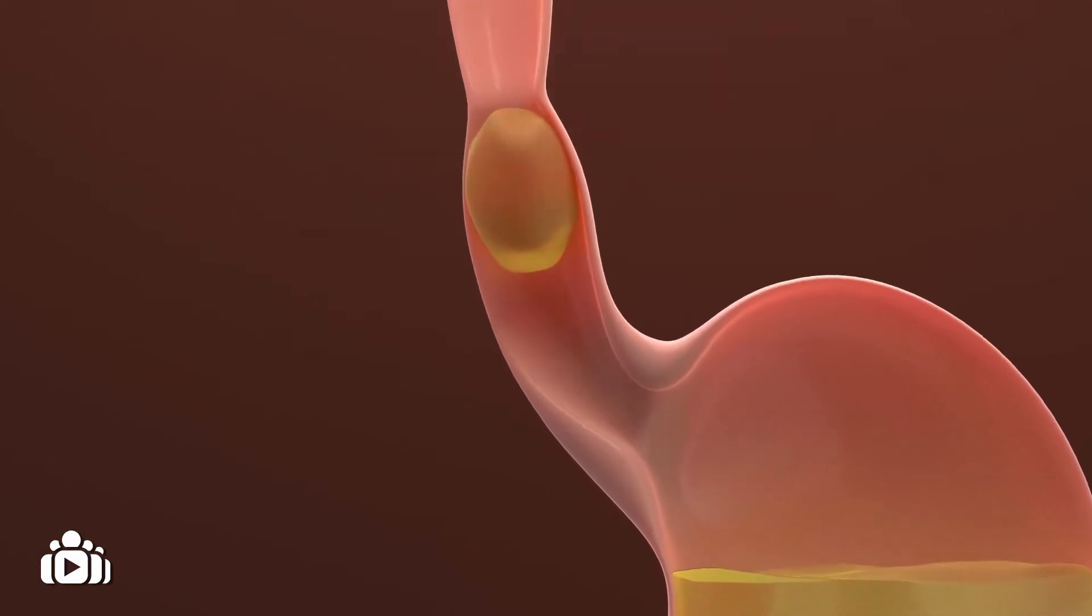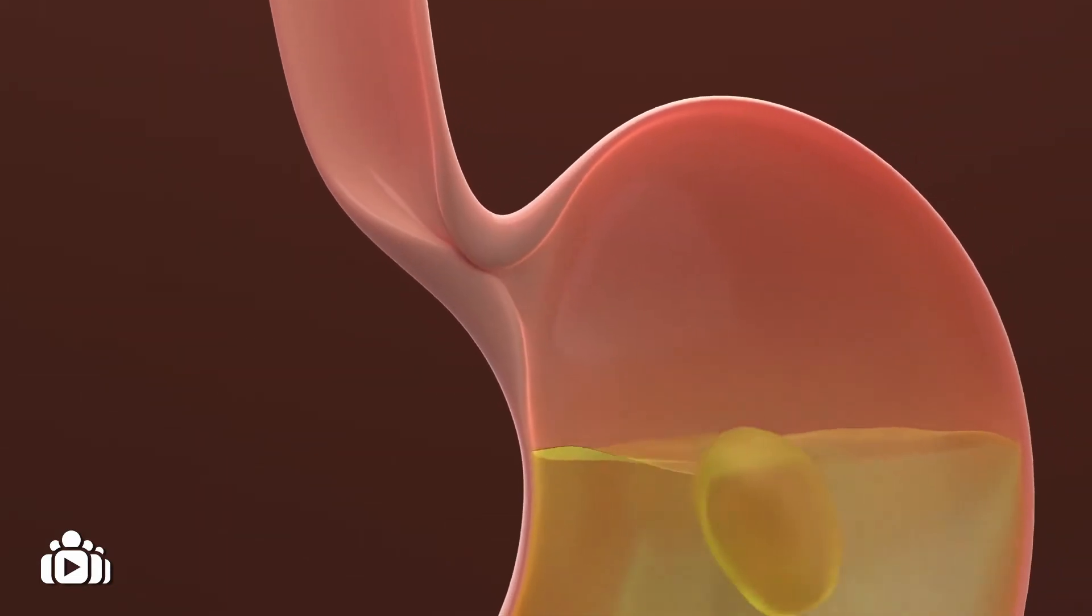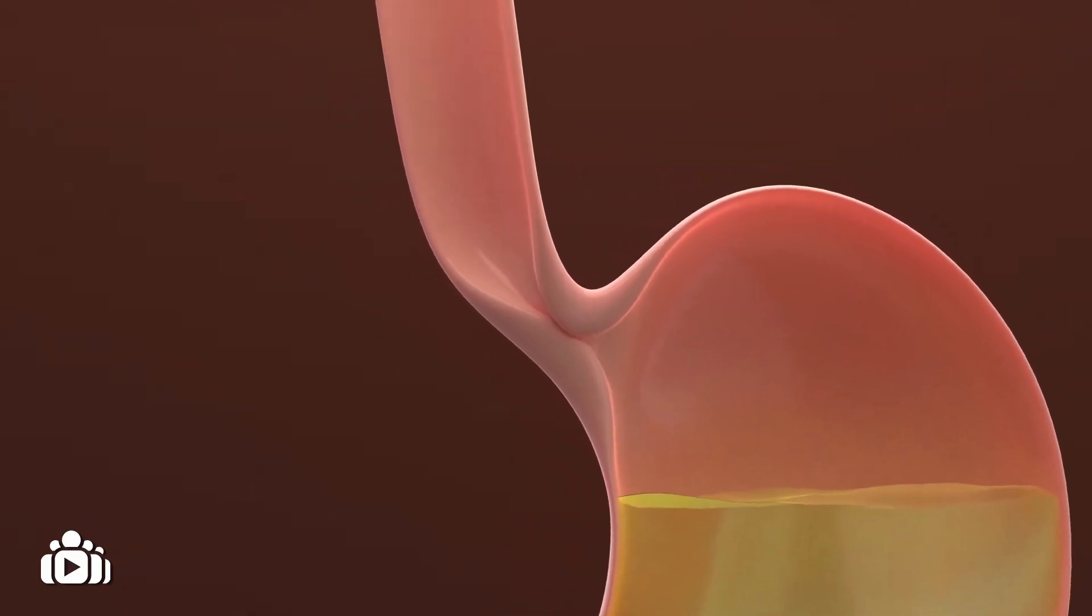This valve relaxes and opens when the swallowed food reaches it, closing afterwards to prevent contents of the stomach from flowing back upwards.